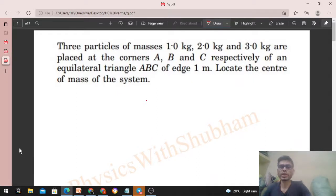Okay hi everyone, so today let's discuss this interesting problem. It says three particles of masses 1 kg, 2 kg and 3 kg are placed on the corners A, B, C respectively of an equilateral triangle ABC of edge 1 meter. Locate the center of mass of the system.